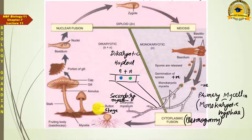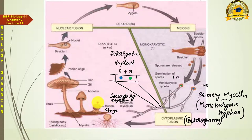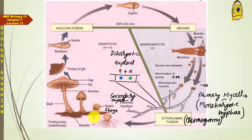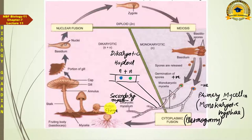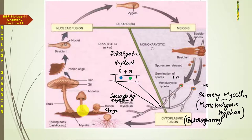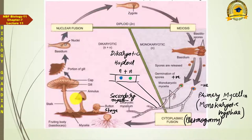Gradually the above-soil part grows more rapidly. The button gradually elongates, and from this elongation a stem-like structure appears which becomes its stalk, and above it an umbrella-like cap begins to develop.